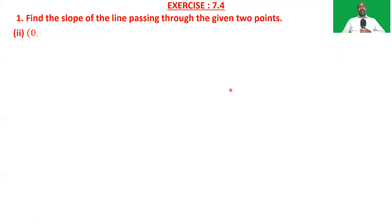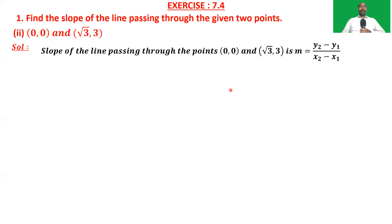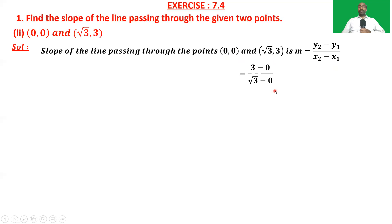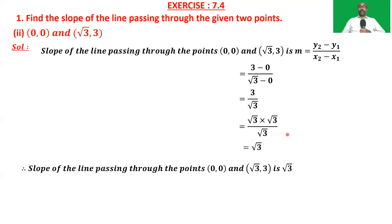The next problem: find the slope of the line passing through (0, 0) and (√3, 3). Slope = (y2 - y1)/(x2 - x1) = (3 - 0)/(√3 - 0) = 3/√3. We can write 3 as √3 × √3, and by cancelling one √3 in numerator and denominator, we get √3. So the slope of the line passing through (0, 0) and (√3, 3) is √3.